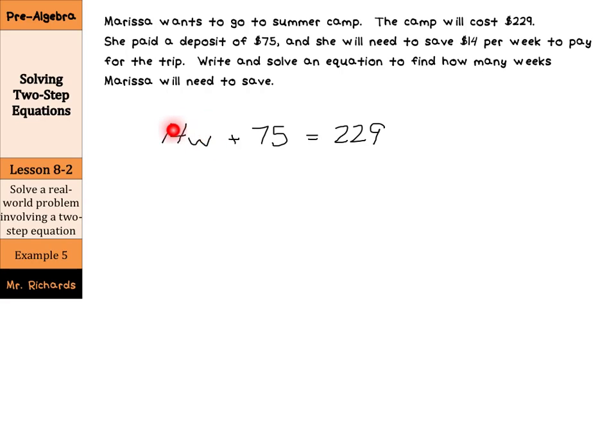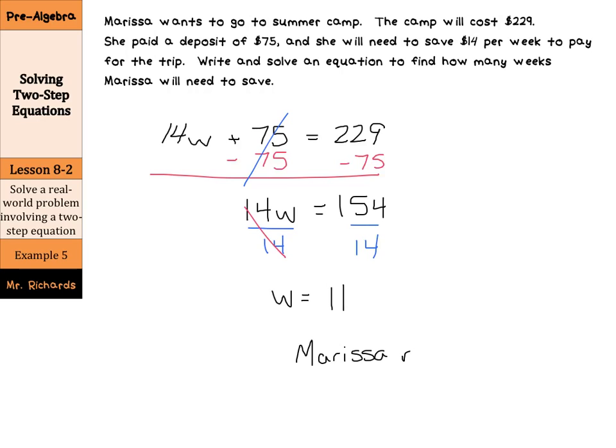So again, $14 per week. We don't know the number of weeks. That's what we're solving for. Plus the deposit of $75 needs to equal $229. And if we solve for W, we'll find our number of weeks. So if we subtract 75 on both sides here, this will cancel. And 14W is going to equal 154. And when I divide by 14 now on both sides, this cancels. And W is going to equal 11. So Marissa needs to save for 11 weeks.